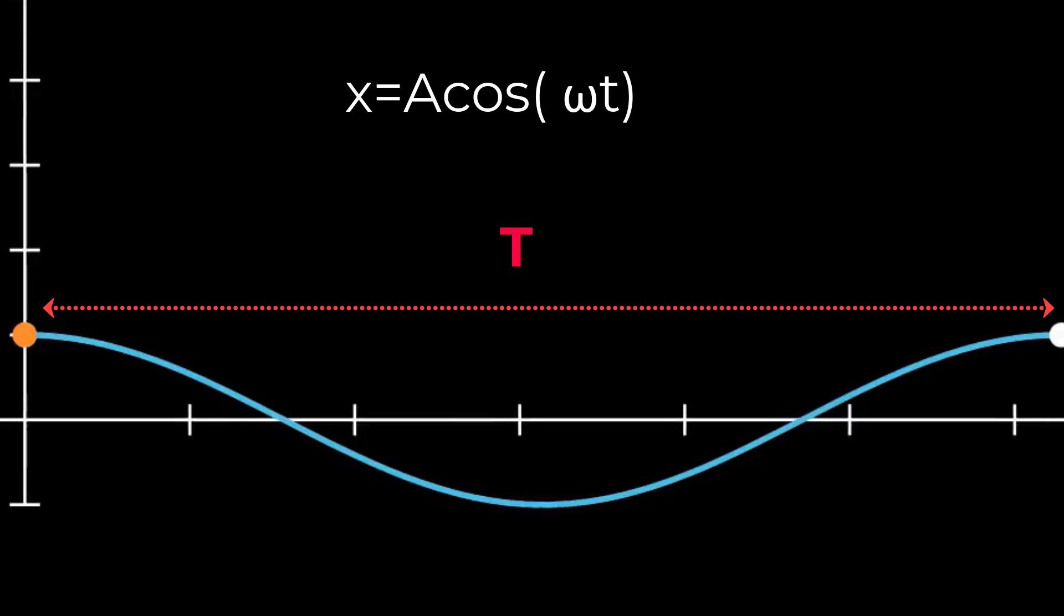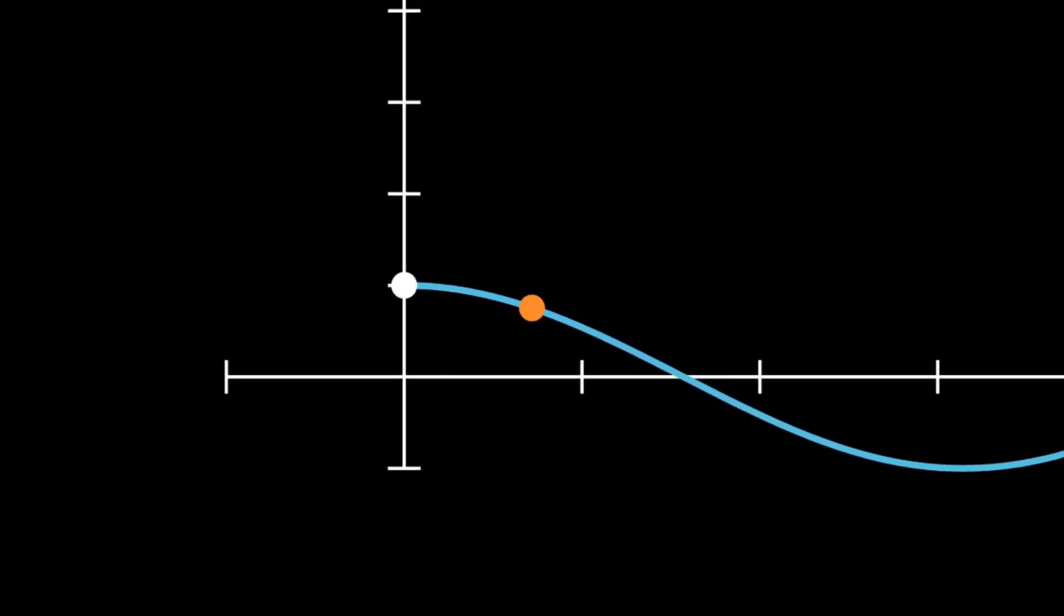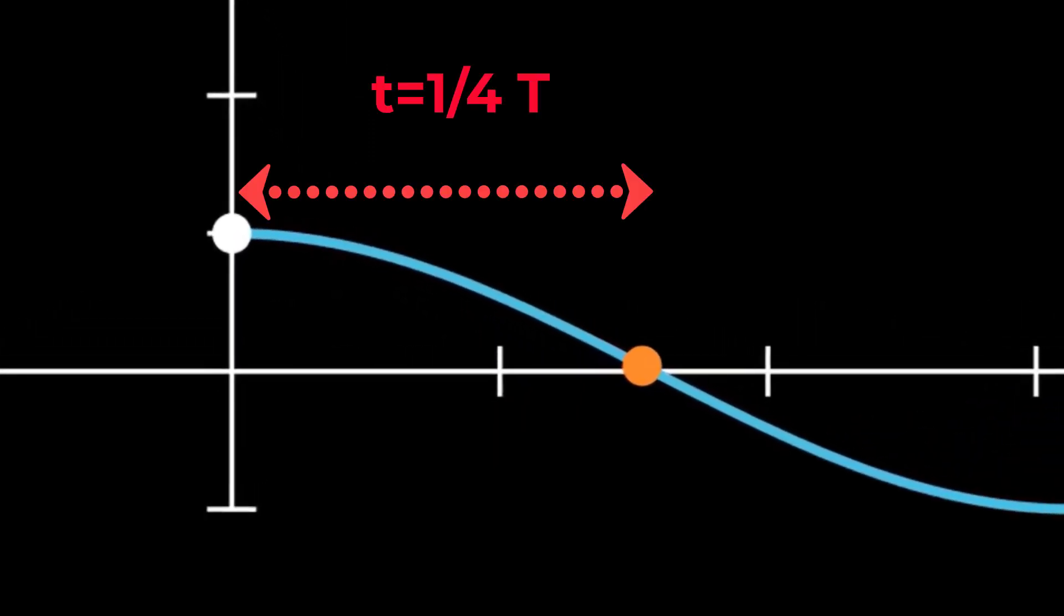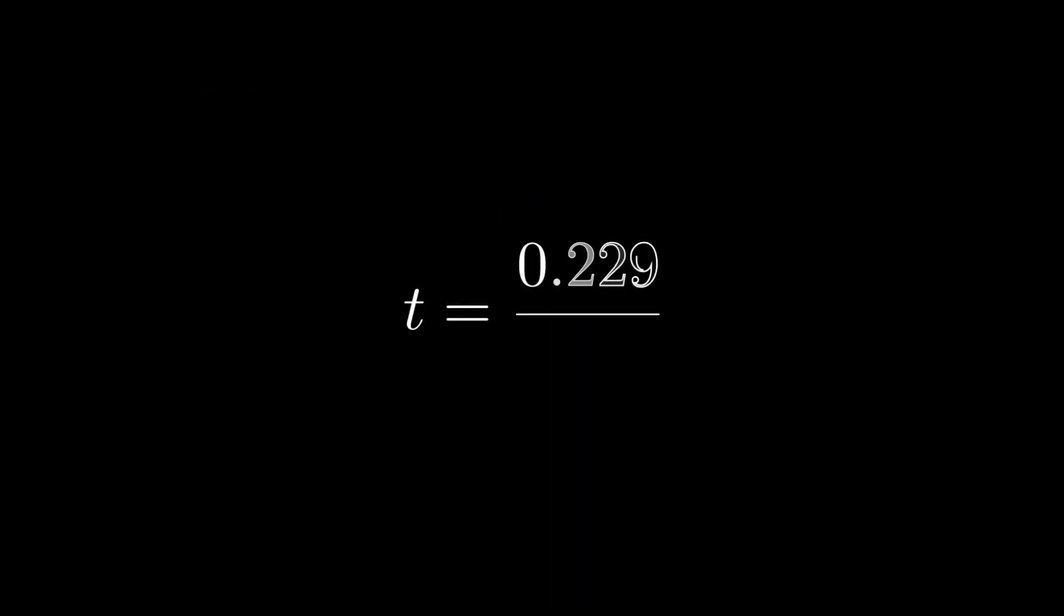If we represent the displacement of the spring with a cosine curve, the time that it takes for the spring to go from its first peak to its first displacement of 0 is equal to a quarter of the cycle. So what we need to do is divide this number by 4, giving us a final answer of 0.057 seconds.